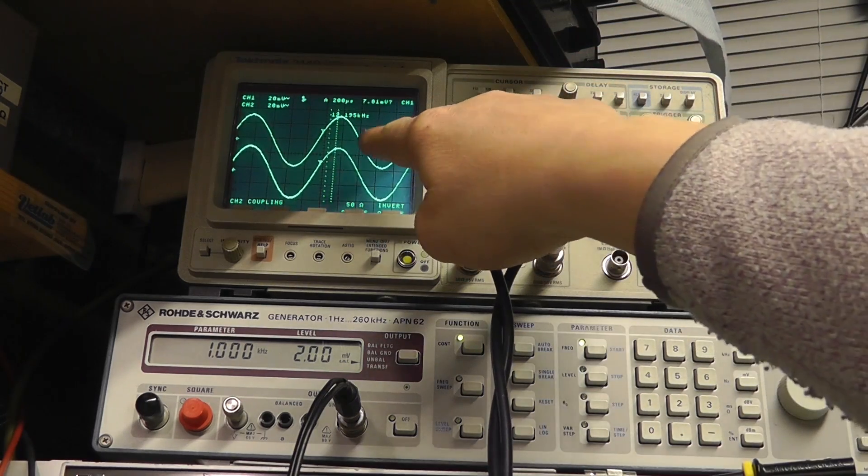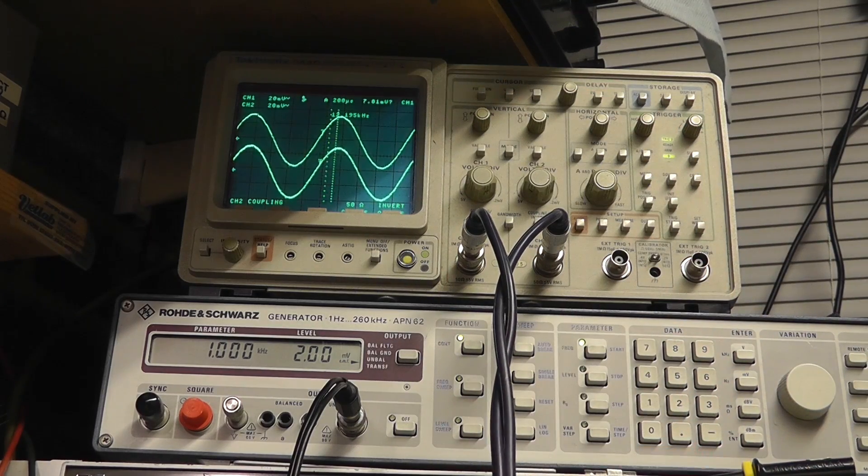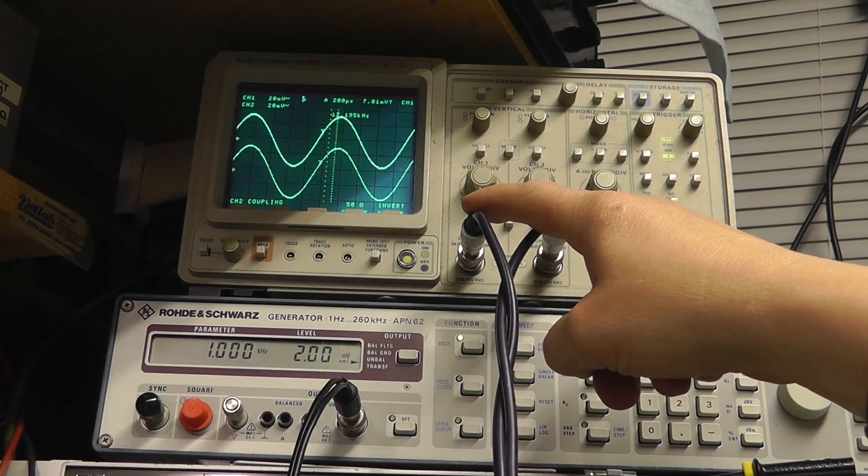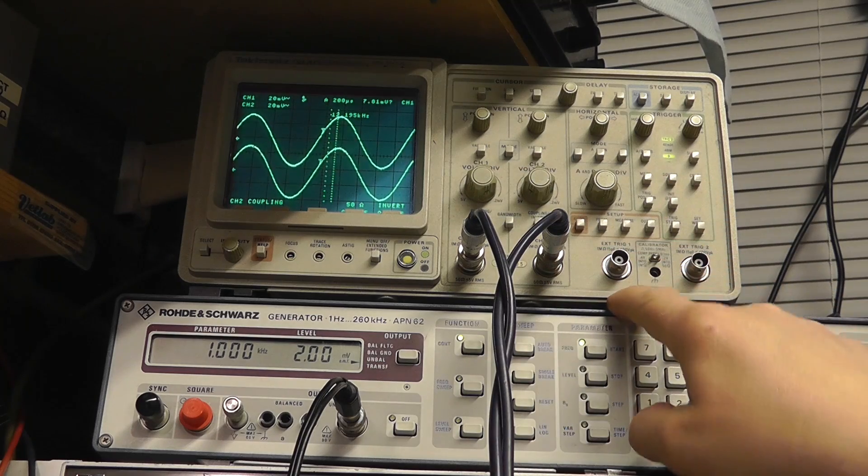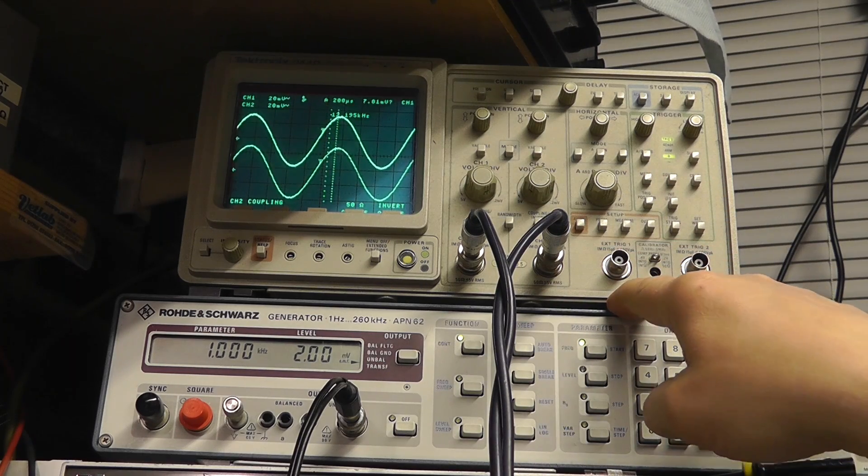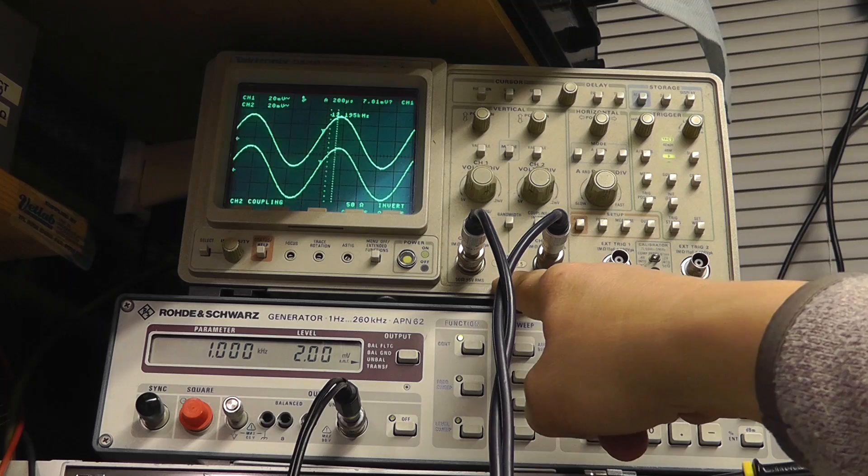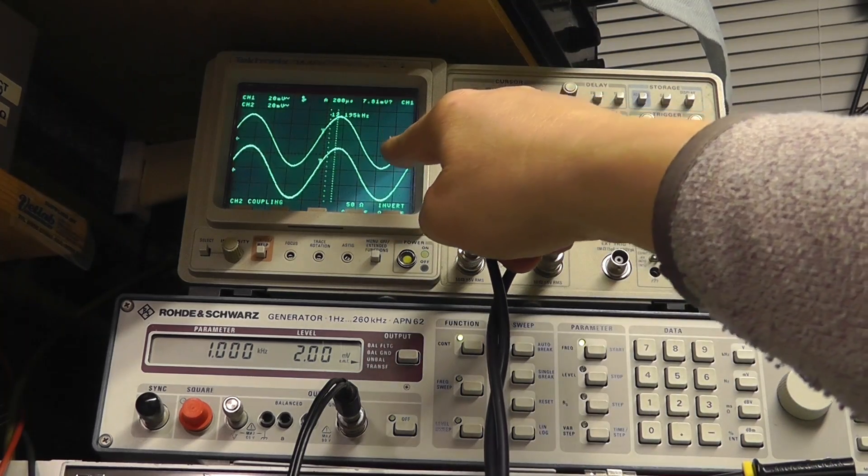This is our output here. Now we're only inputting into a one mega input or 10 mega, whatever the input impedance is of this. It's not selected on 50 ohms at the moment, but you can see clearly here that we've got a good output. 20, 40, 60 millivolts, 65 millivolts, peak to peak.